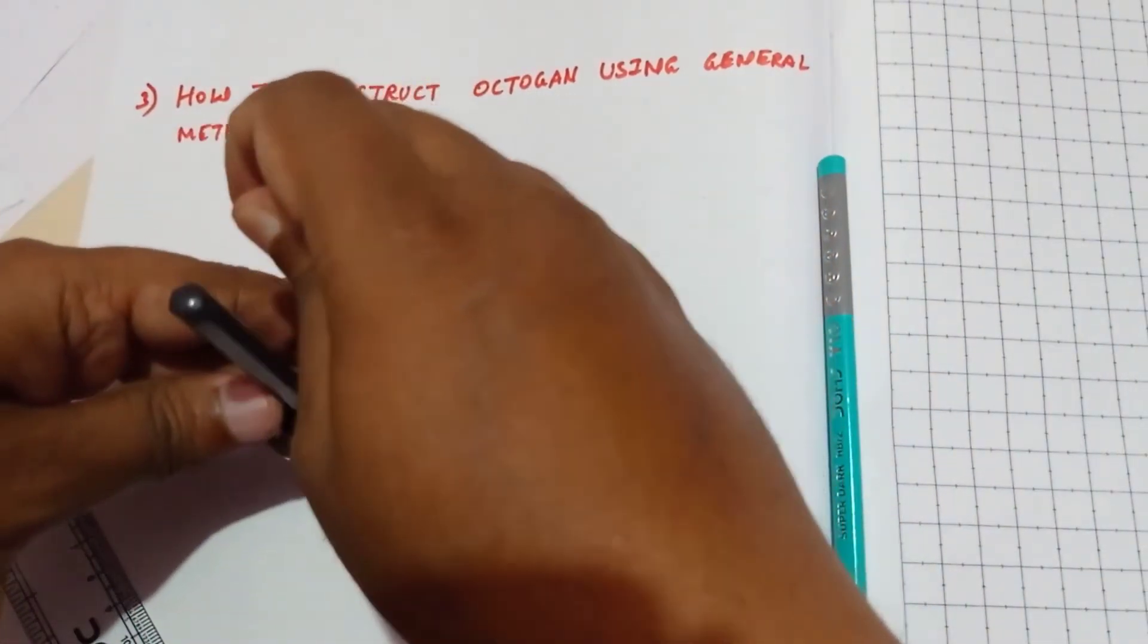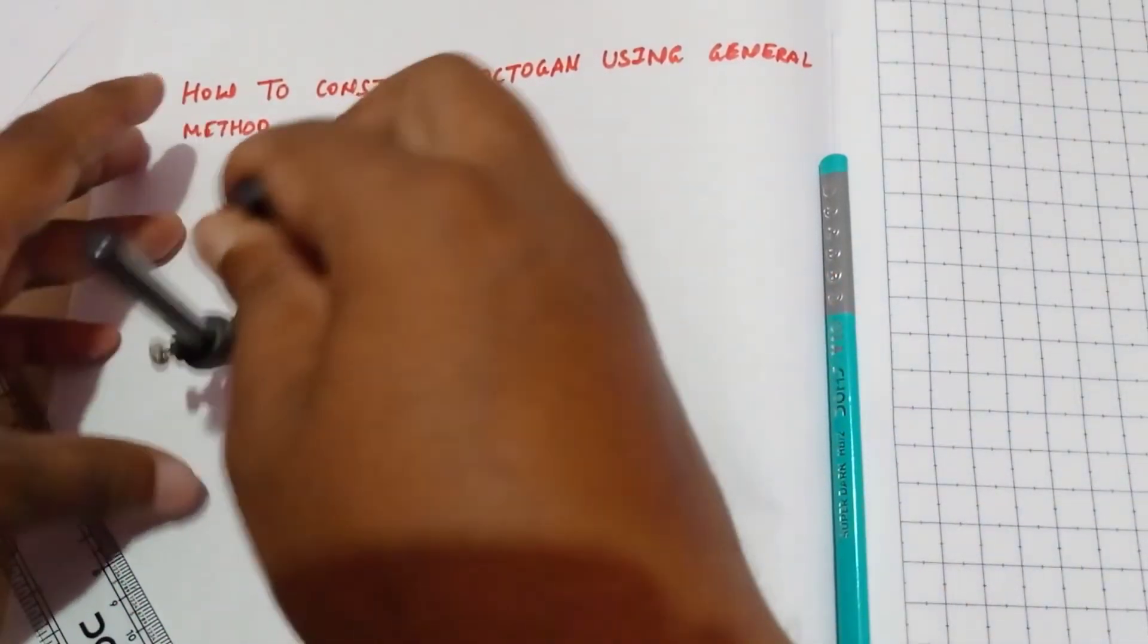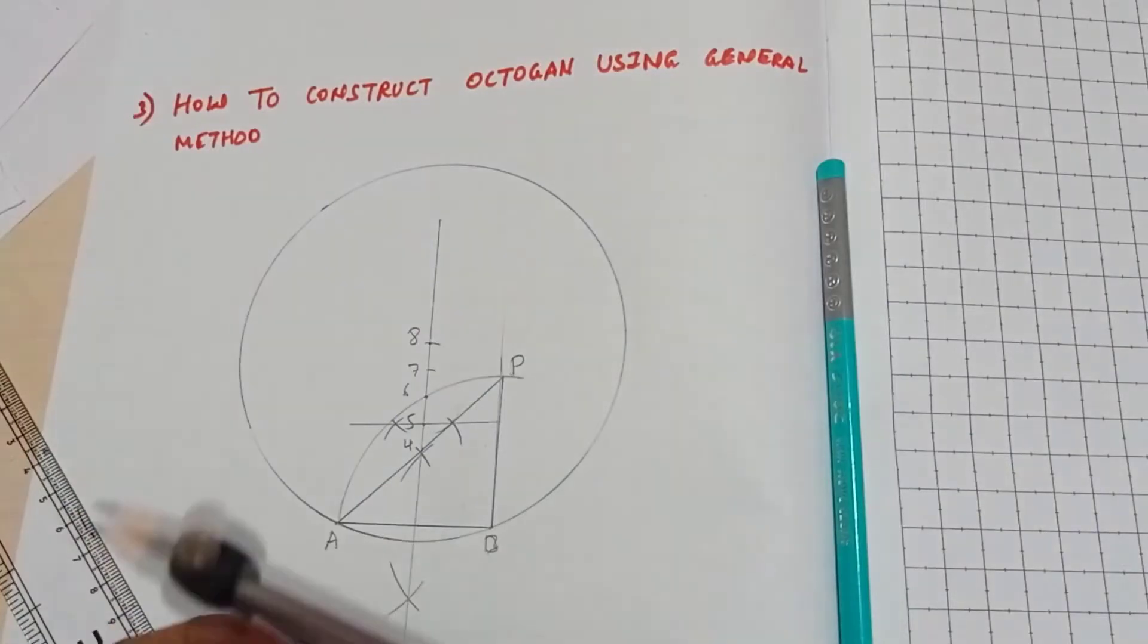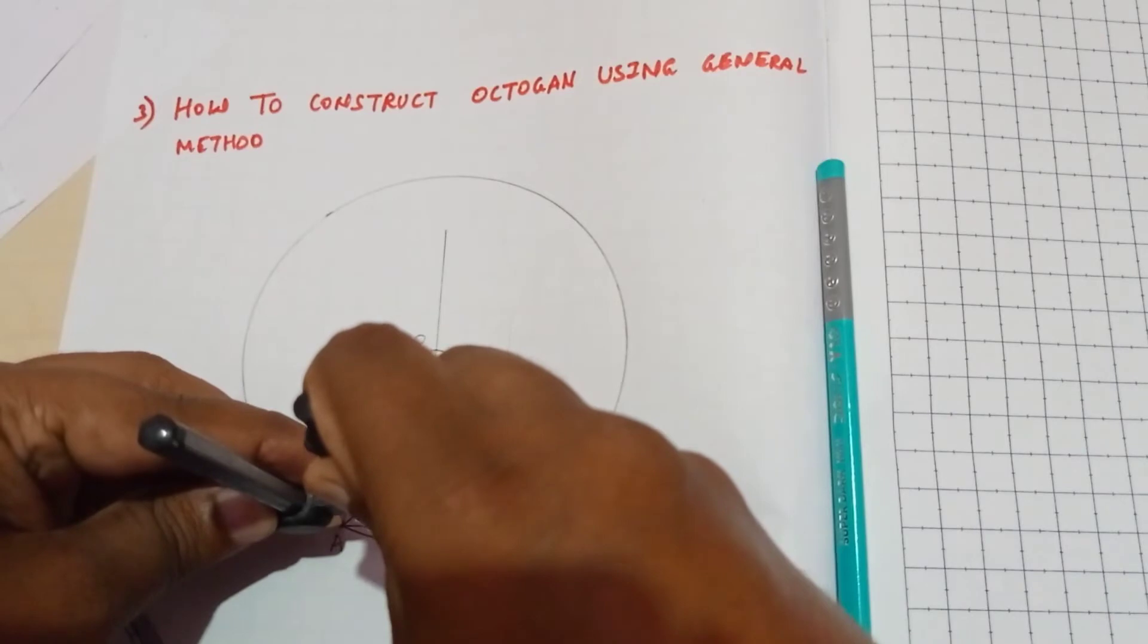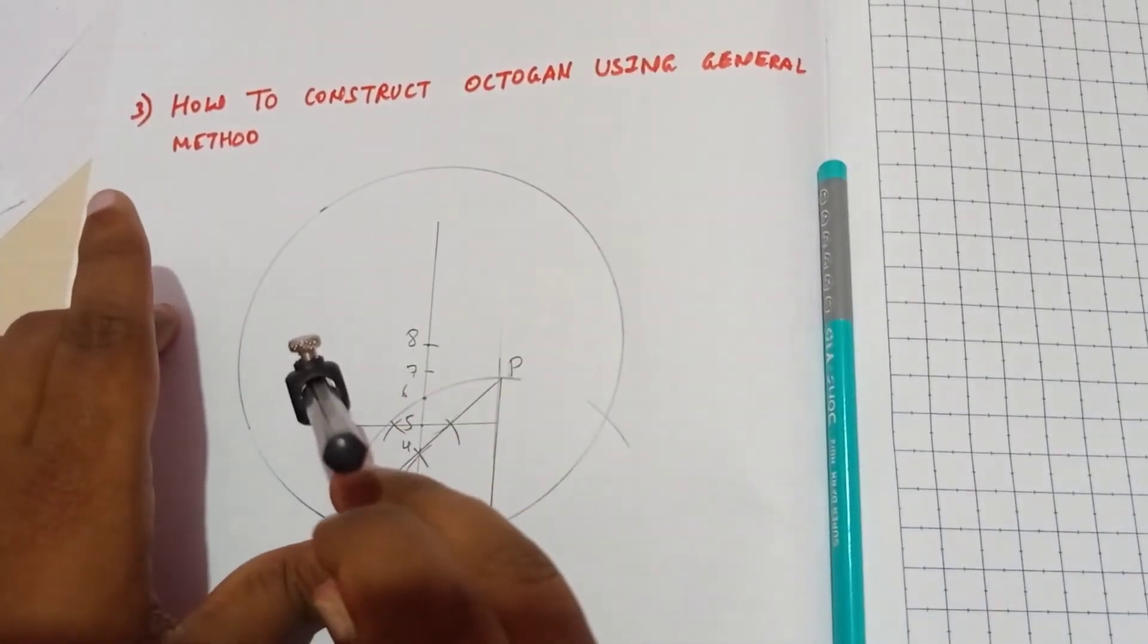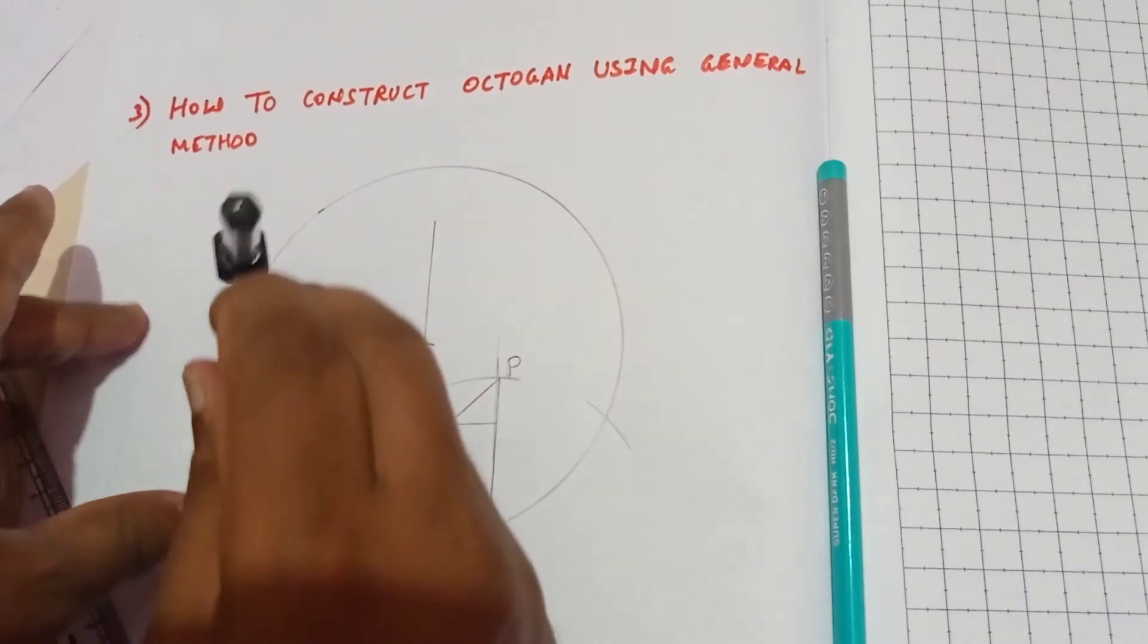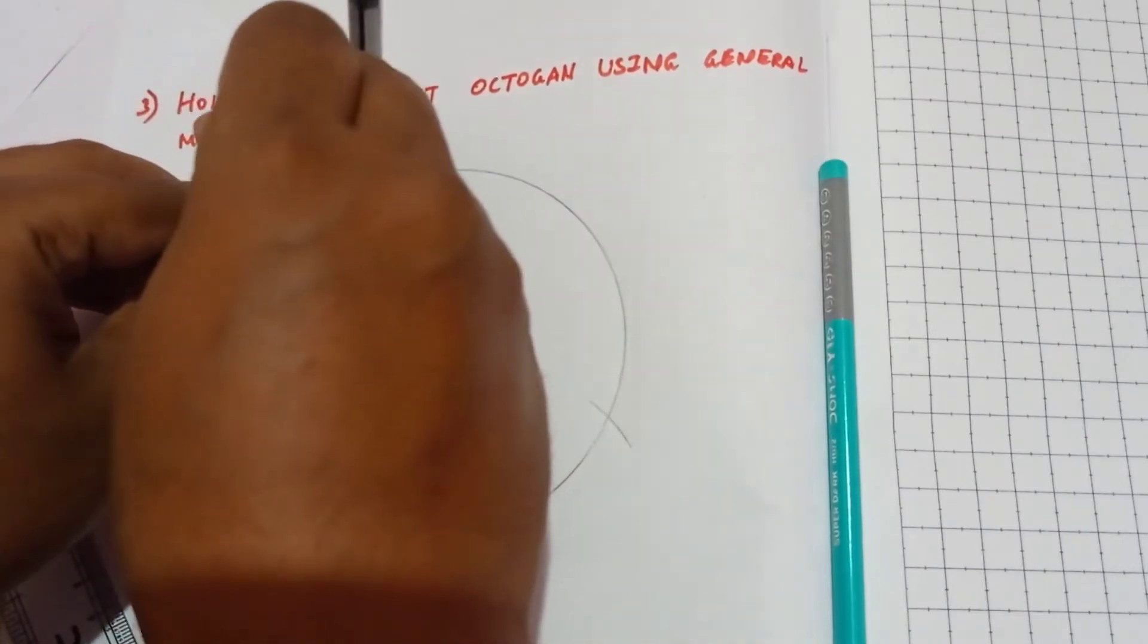Now after this we need to measure this AB length. Measure this AB length and cut the arcs. Take properly the cut points. A little bit of mistake will lead to not getting the exact octagon here.